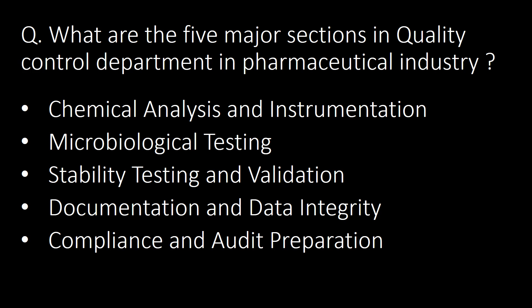What are the five major sections in the quality control department of the pharmaceutical industry? The five major sections are: first, chemical analysis and instrumentation; second, microbiological testing; third, stability testing and validation; fourth, documentation and data integrity; and fifth, compliance and audit preparation.